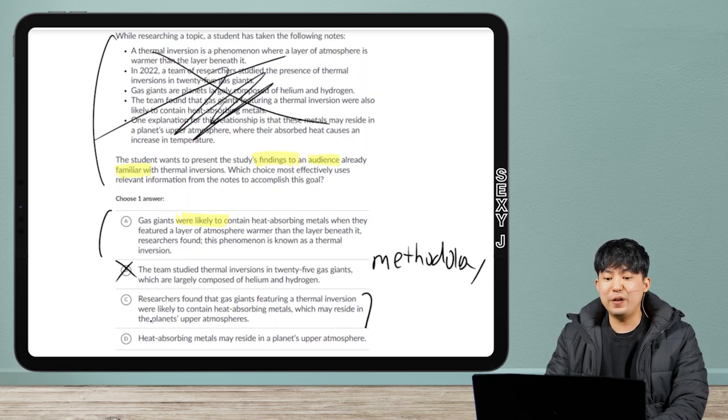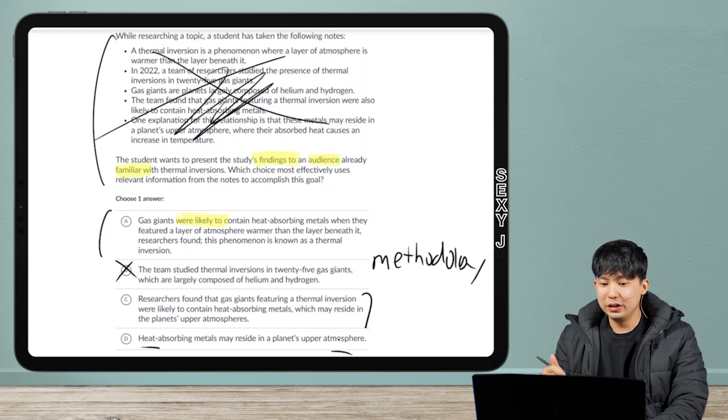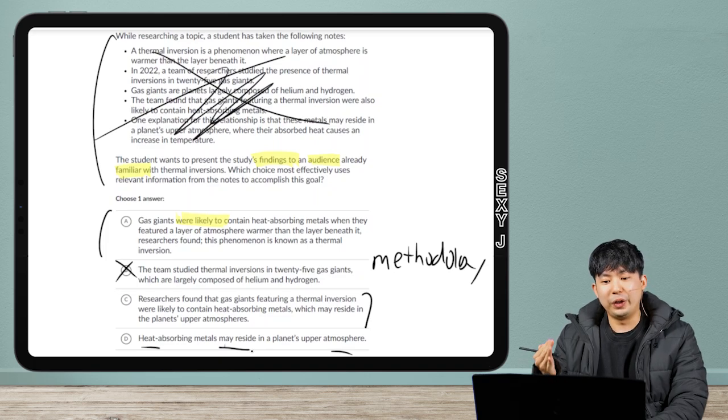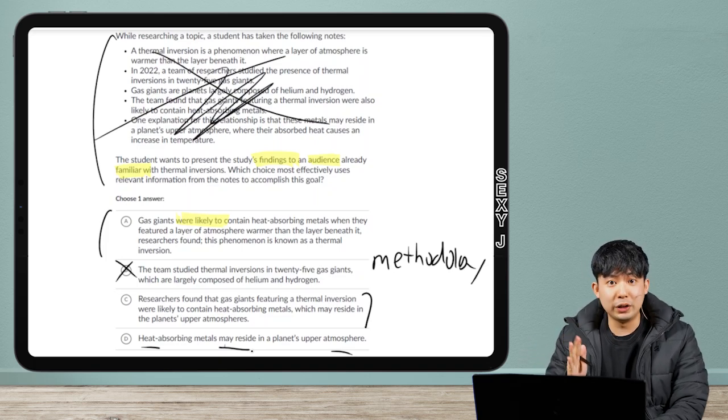honestly, guys, if the answer choice is this short on a rhetorical synthesis, you can feel pretty safe crossing it out. But, I mean, okay, isn't that kind of a finding, though, Jay? Okay, we'll keep it. So, notice here, we were only able to get rid of one answer choice. Does that mean I'm going to make you guys read the notes? No, I already crossed it out, right?